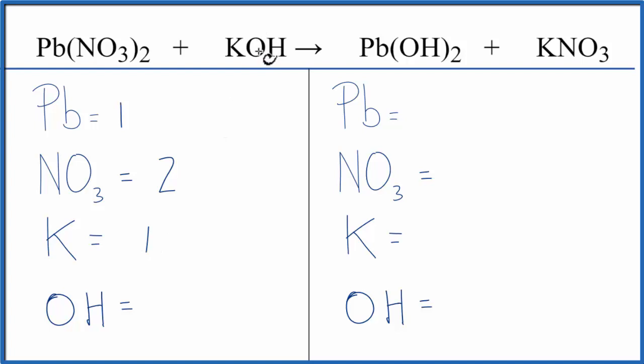One potassium, and then OH, that's the hydroxide ion. We have it here, and we have it here. Since it appears on both sides, we'll count it as just one thing. We have one hydroxide there.